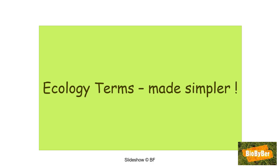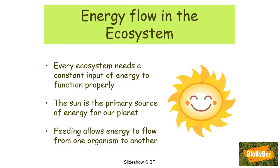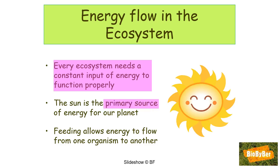It is vital to learn your definitions and make sure you understand what they mean. All of the energy in an ecosystem comes from the Sun. Every ecosystem on the planet depends on the Sun and needs this constant supply of energy in order to function properly. The Sun is the primary source of energy for our planet. The light energy is changed into chemical energy in food when plants make food in photosynthesis — this is an energy conversion where solar energy is converted to chemical energy.